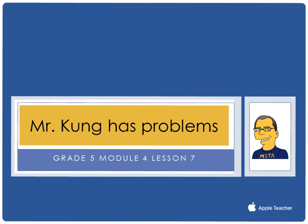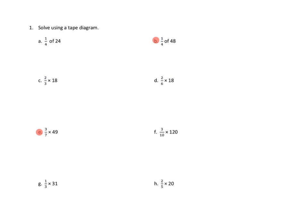Hello, and welcome to another episode of Mr. Kung Has Problems. Tonight in grade five, module four, we are working on lesson number seven, and that means that we are multiplying any whole number by a fraction using tape diagrams. Let's take a look at a couple problems from tonight's homework. I think I'll do at least three.